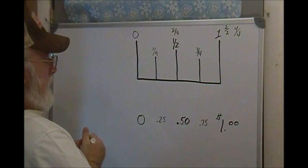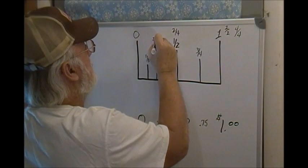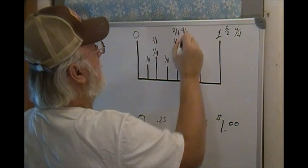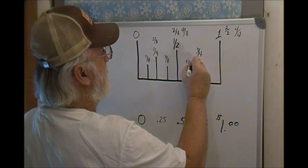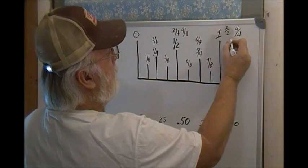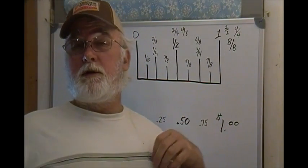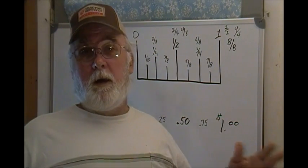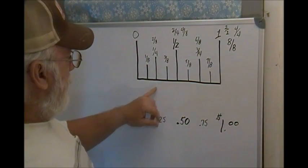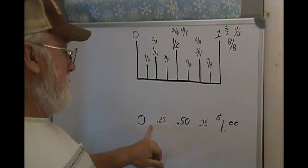We're going to break these down into one eighths. This is one eighth. A quarter is two eighths. Then we've got three eighths. Then we've got four eighths, which is a half. Then we've got five eighths. This is six eighths, and here is seven eighths, and one is eight eighths. If you pay any attention to the stock exchange, they'll talk about something going up one and an eighth, or one and three eighths points, which is twelve and a half cents. If a quarter is twenty-five, then an eighth is going to be twelve and a half cents.